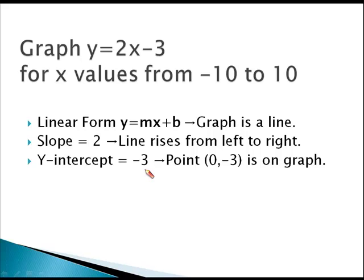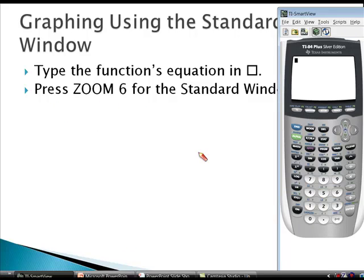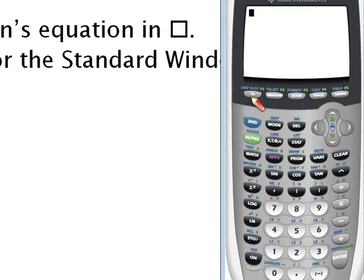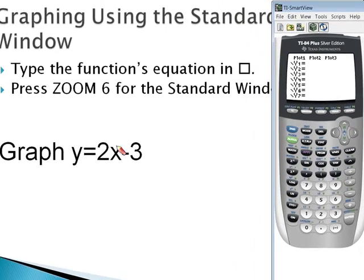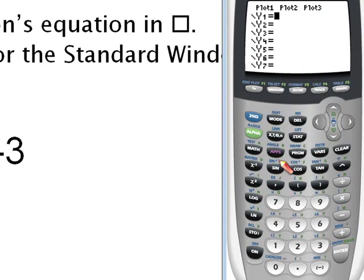First we're going to type the function's equation into the y equals area of our calculator, and then we're going to press zoom 6 for the standard window. So I press y equals. Remember we're graphing y equals 2x minus 3, so I enter 2x.